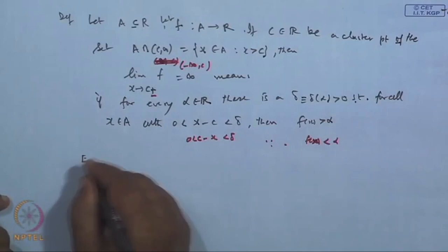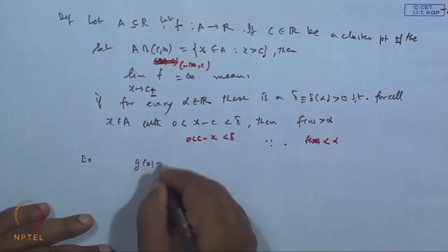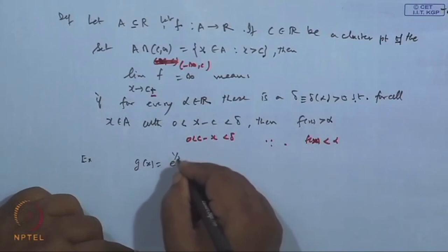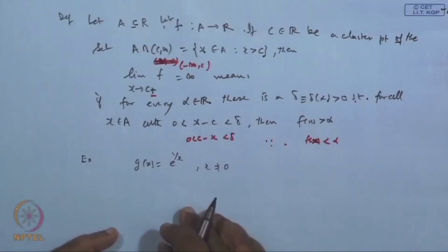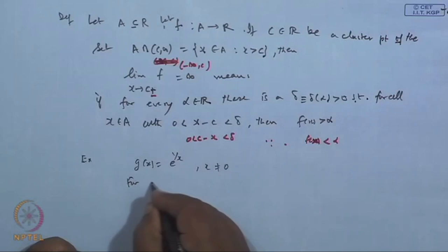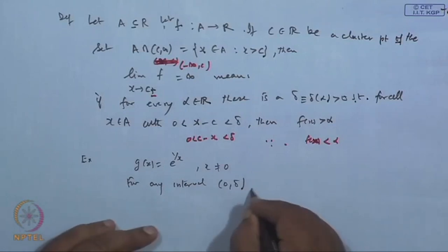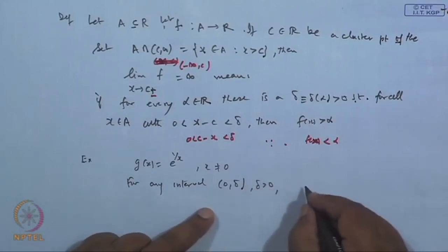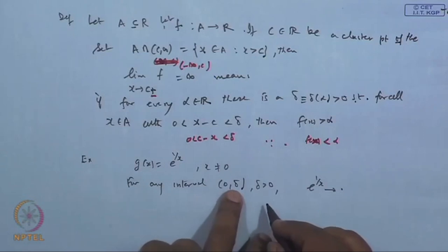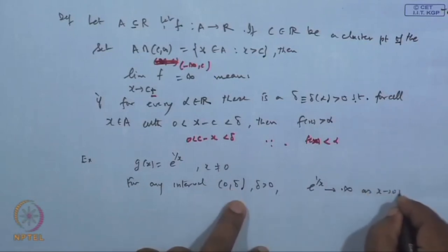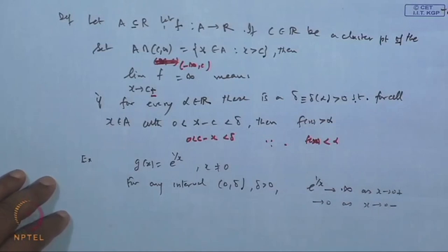For example, f(x) = e^(1/x) for x ≠ 0. We have already seen that the right-hand limit lim(x→0⁺) e^(1/x) tends to ∞, and the left-hand limit lim(x→0⁻) e^(1/x) tends to 0. These were already discussed.